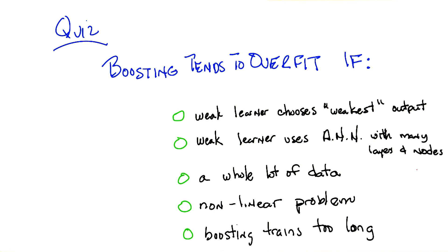The third option is boosting has a lot of data — your training data is very, very large and you have lots and lots of examples. The fourth case is that the true underlying hypothesis, the true underlying concept, is in fact non-linear, so you can't just draw a line. And the fifth case is that we let boosting train much too long — not just a thousand iterations, but a hundred billion iterations.